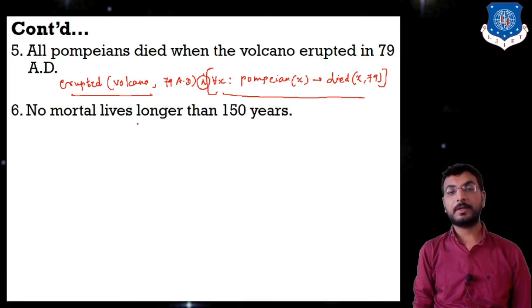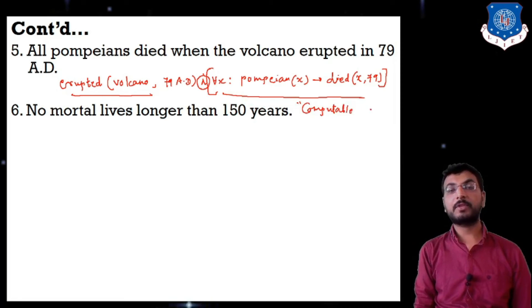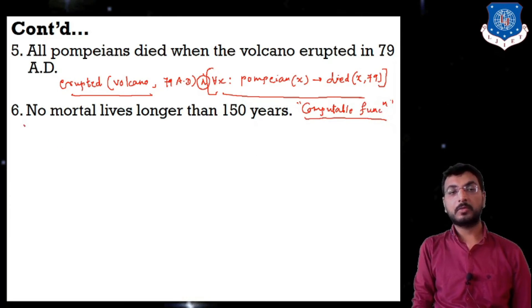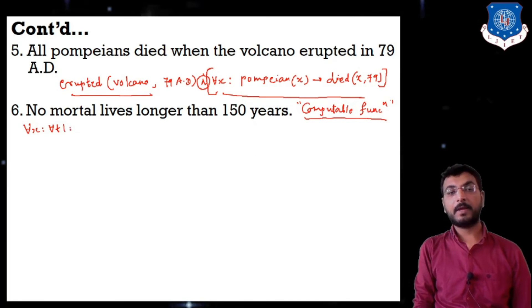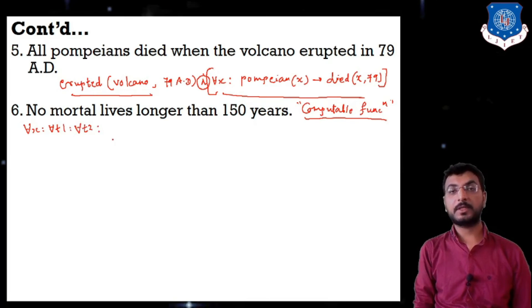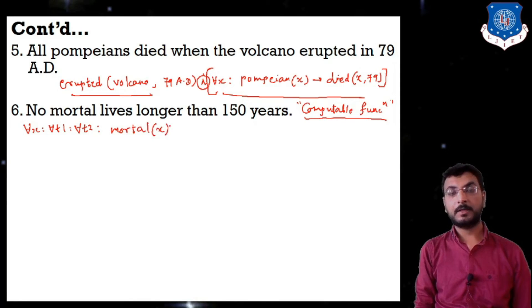Sixth: 'No mortal lives longer than 150 years.' This is the key demonstration of computable functions today. We write: for all x, t1, t2 — if mortal(x) and born_at(x, t1) and gt(t2, t1) — meaning t2 is greater than t1...